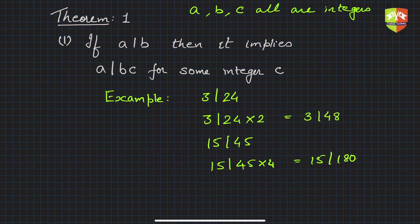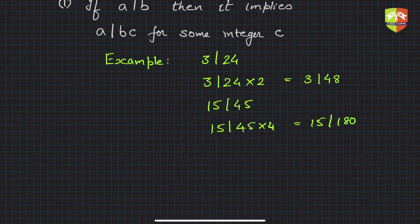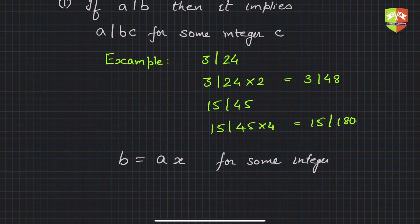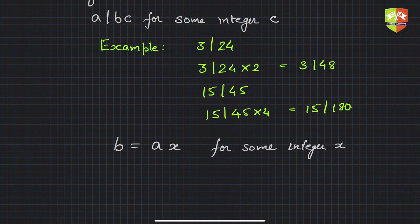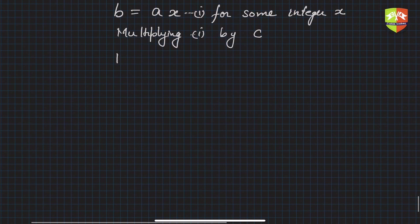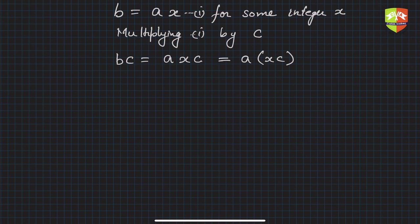Now let's prove this. Since a divides b, by the definition of divisibility there exists an integer x such that b = ax. Now multiplying both sides by c, we get bc = axc.